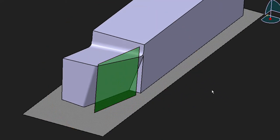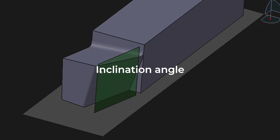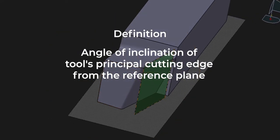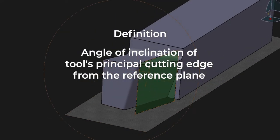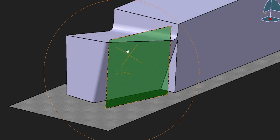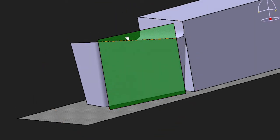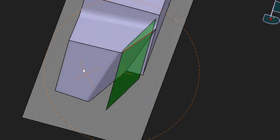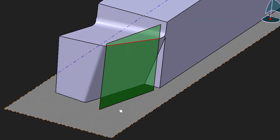The second angle is the inclination angle. The inclination angle is the angle of inclination of the tool's principal cutting edge from the reference plane, which means the inclination of this cutting edge from this reference plane.